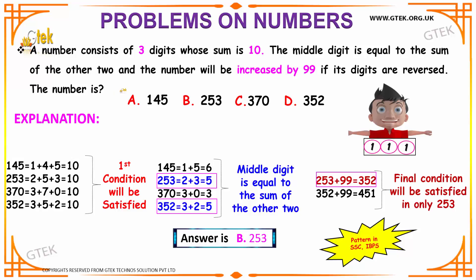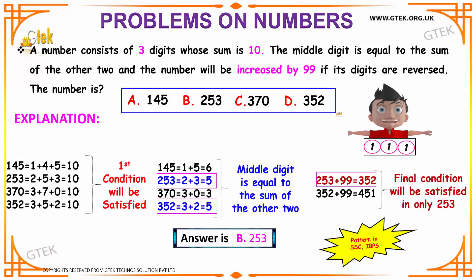This question can be analyzed from your options — we can guess the number from the options. Our options are: A) 145, B) 253, C) 370, and D) 352.